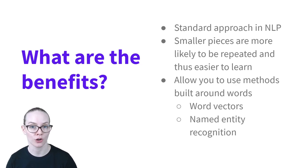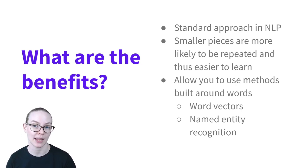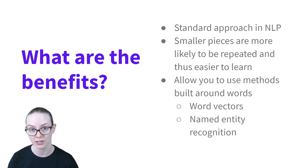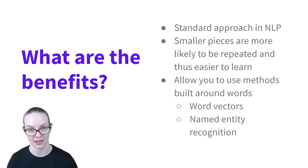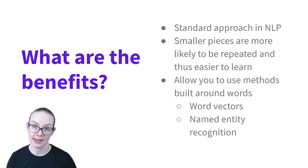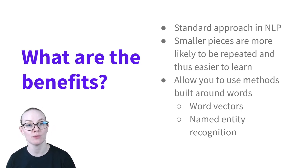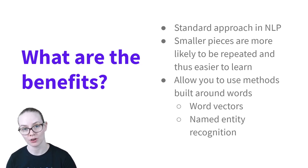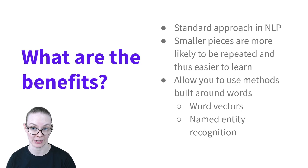In addition, because longer units such as sentences are much less likely to be repeated than shorter units such as words, it's easier to find more examples of a unit of analysis if it's shorter and more often repeated. Tokenization also allows you to use many different methods that are based around the idea of words, for example, using word vectors or named entity recognition.